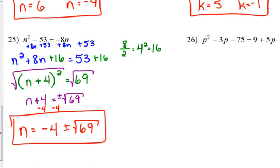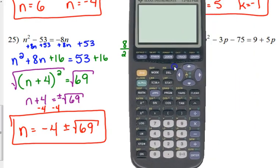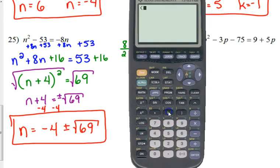You can still check these. You just need to be careful with parentheses. So, in your calculator, let's look at that. You check them one at a time. So, negative 4 plus the square root of 69. You've got to close your parentheses right there to close it with the square root. You need to close it again around the entire expression. That's squared. Minus 53. It gives us a crazy decimal number, but look what it's supposed to be equal to. It's supposed to be equal to negative 8 times what we just plugged in. 4 plus the square root of 69. And as long as those give us the same decimal expression, we're good.